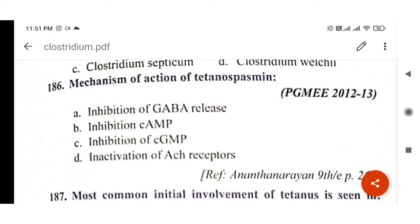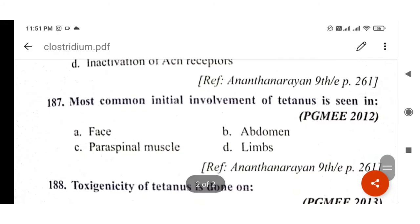Next question: Mechanism of action of tetanospasmin is inhibition of GABA release. Remember this. This is a PGMEE 2012-13 question with Ananthanarayan as reference.